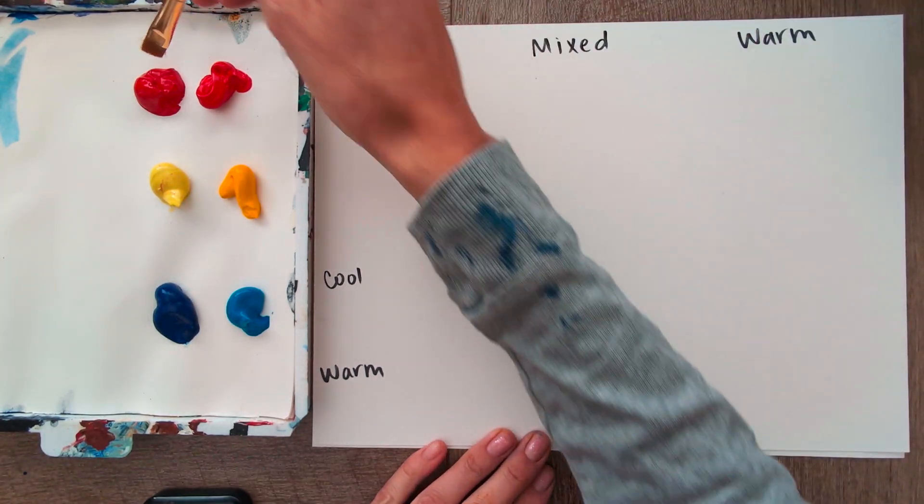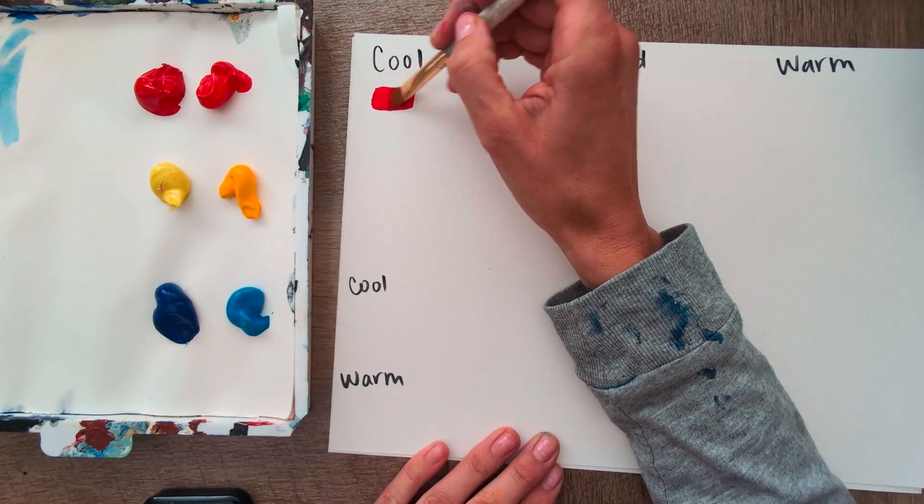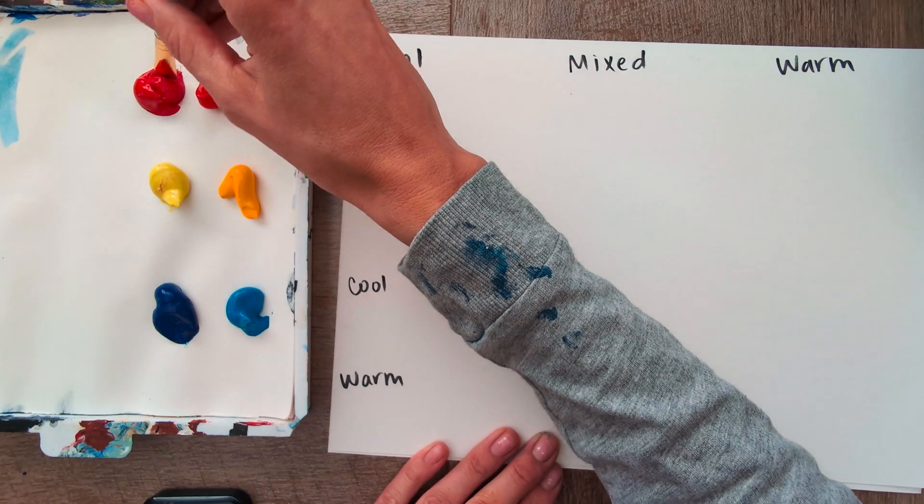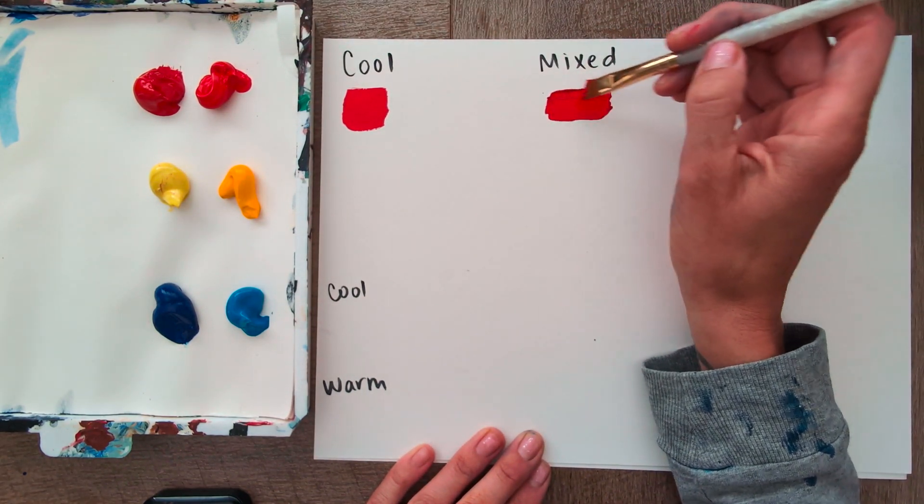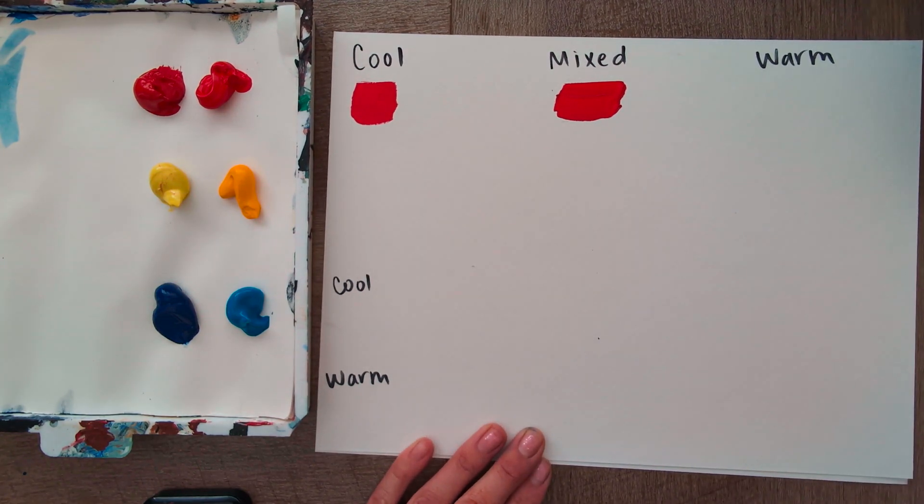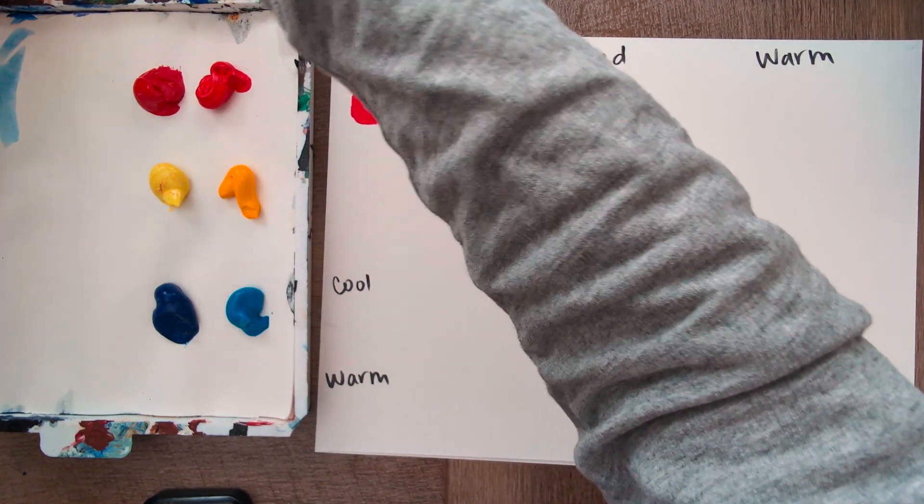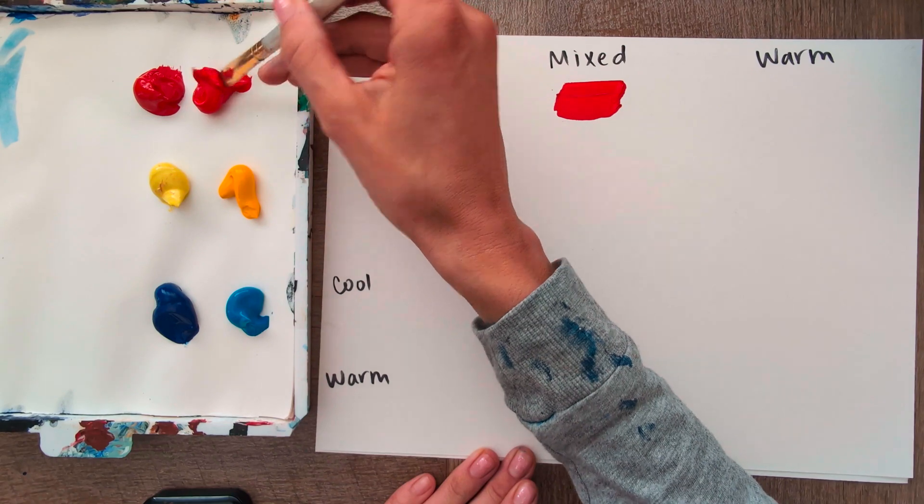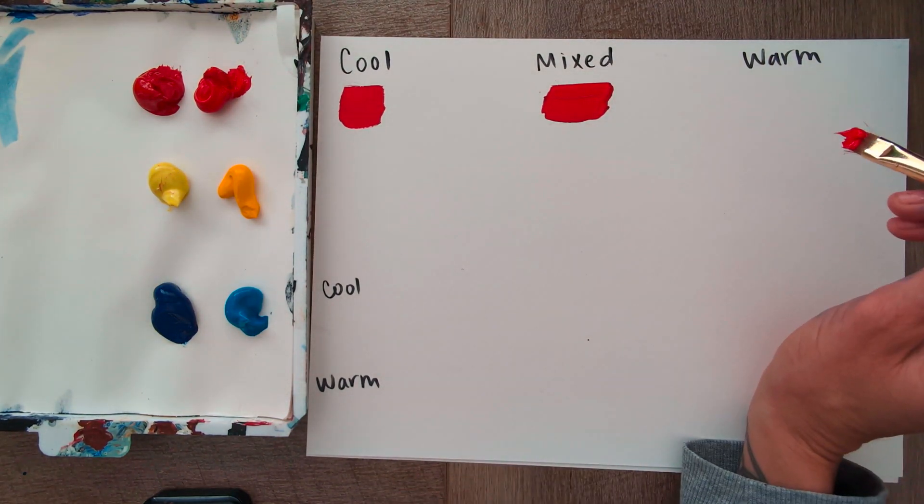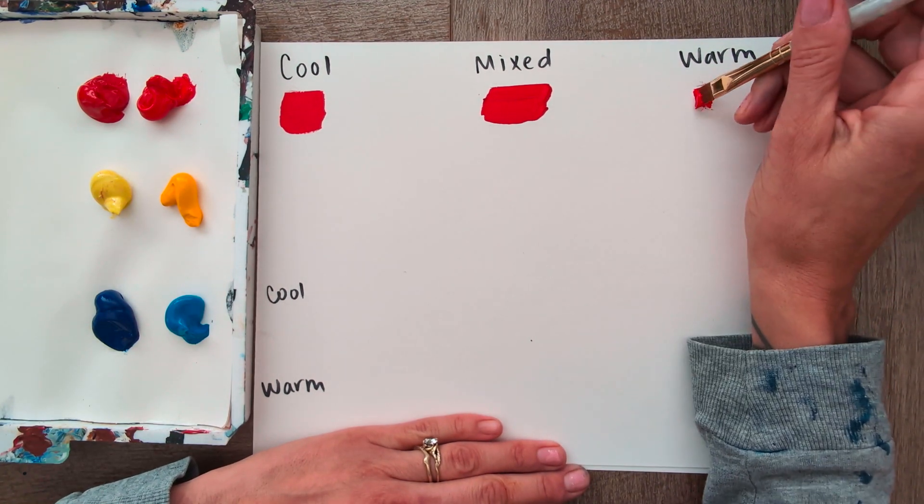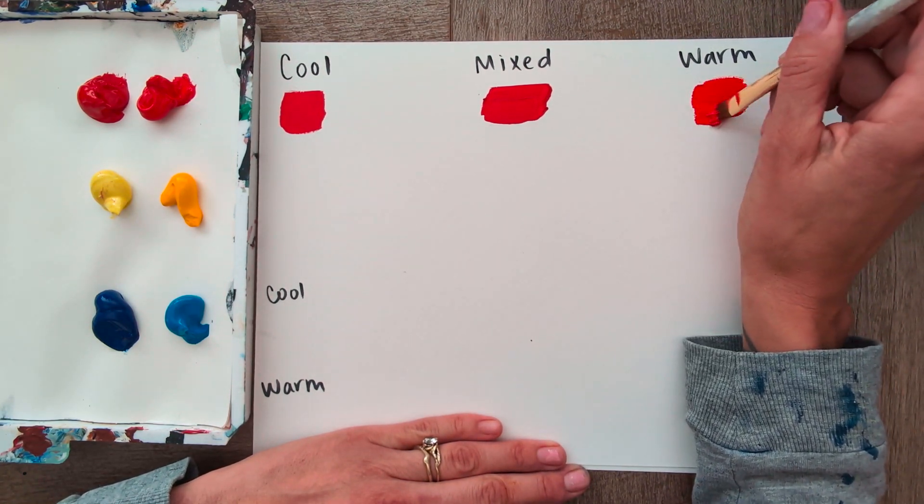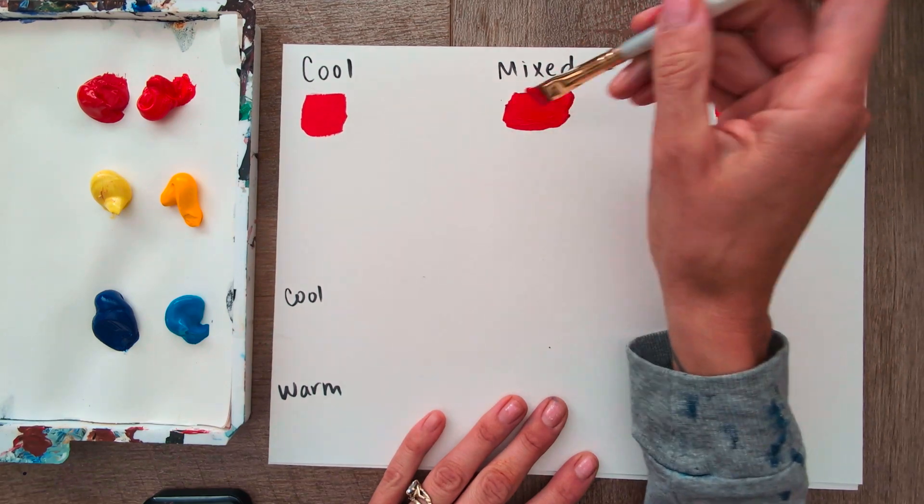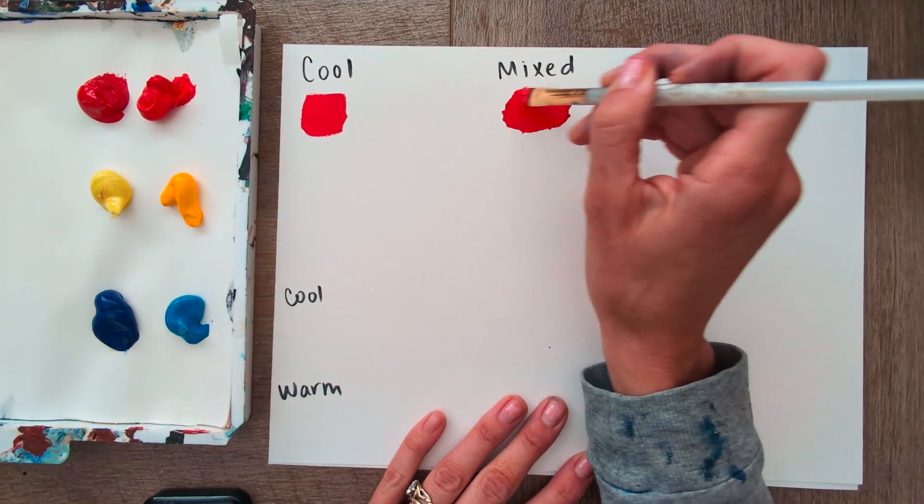All right, so I'm going to do cool first, just basically a little swatch. Okay, and then I'm going to go ahead and just put some here so that I can mix it. Go ahead and wash my brush real quick. And I'll add the warm, just pure warm cadmium red. The red is probably the hardest to see the difference, especially on film. But I'm going to go ahead and take some of that and just mix it now on my paper directly, just so you can kind of see.